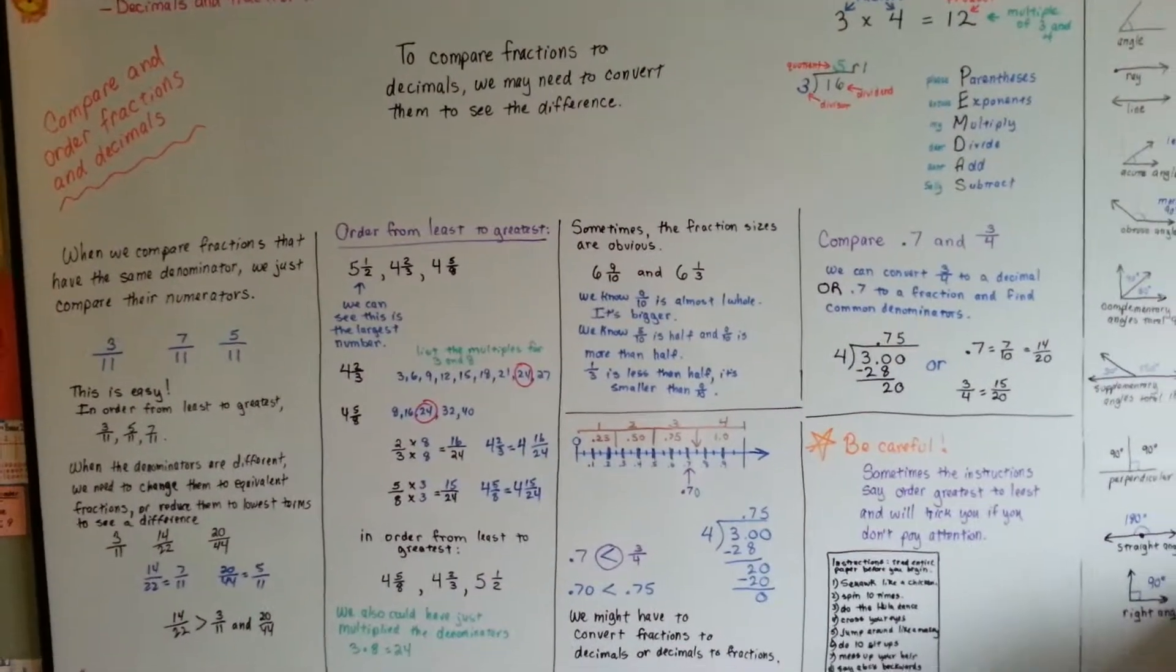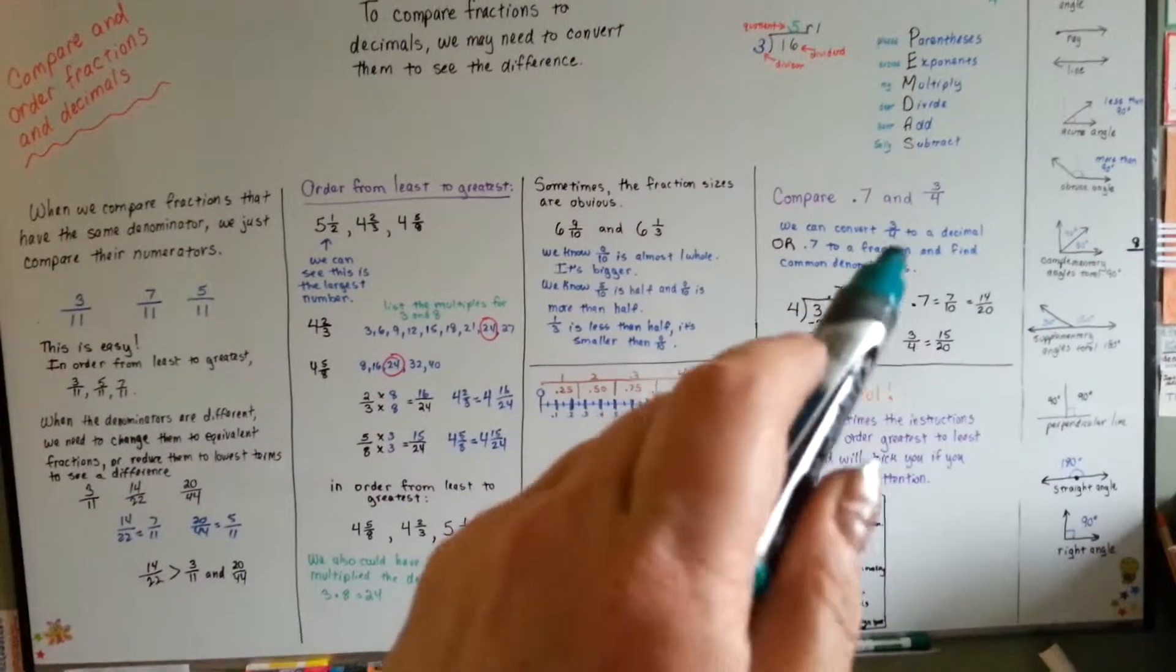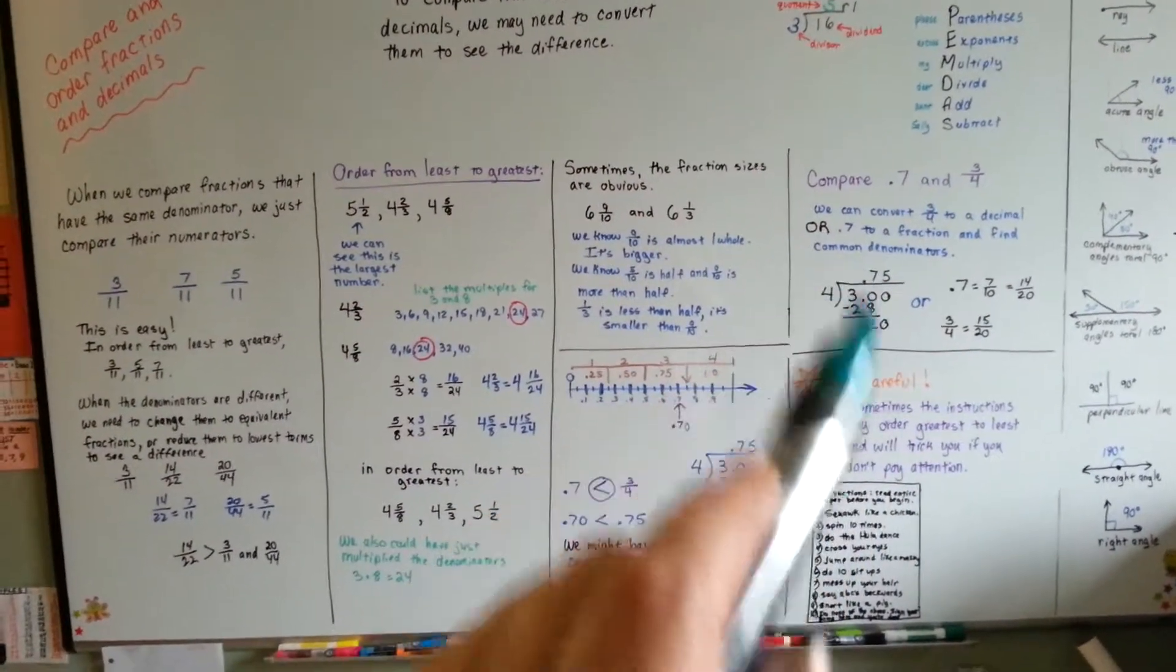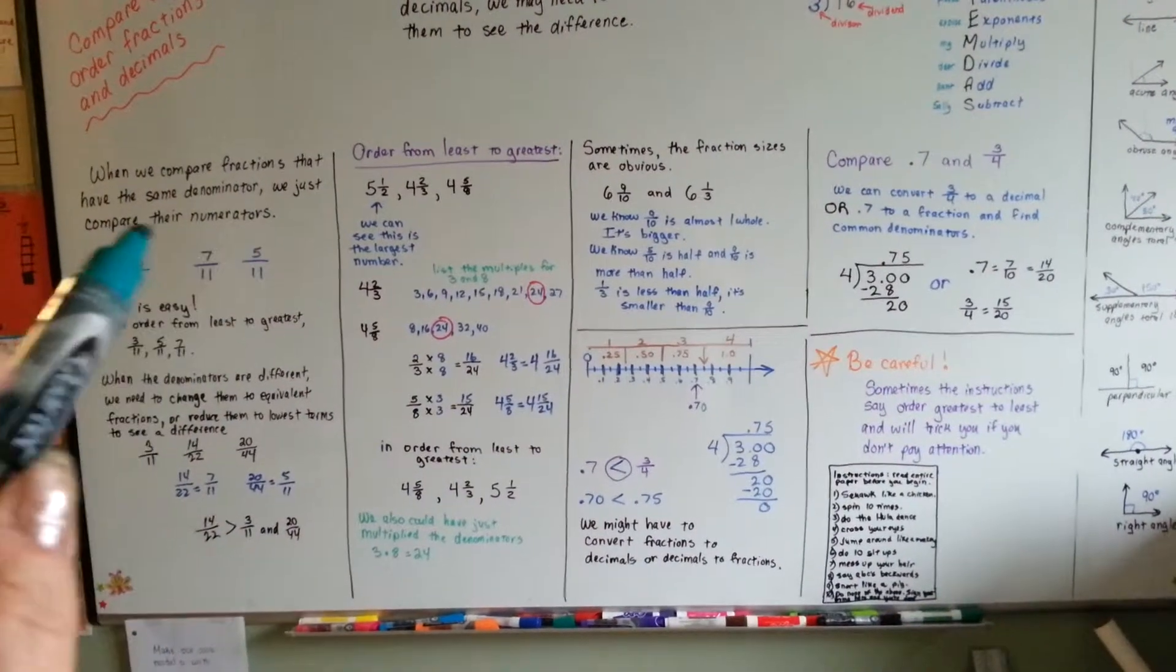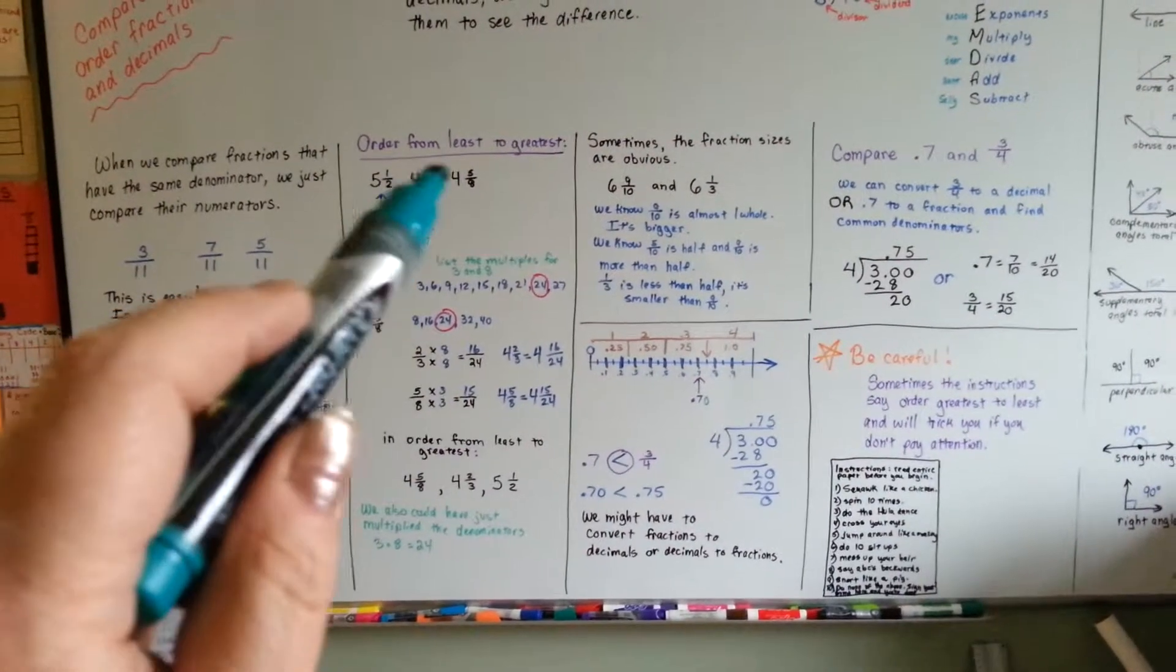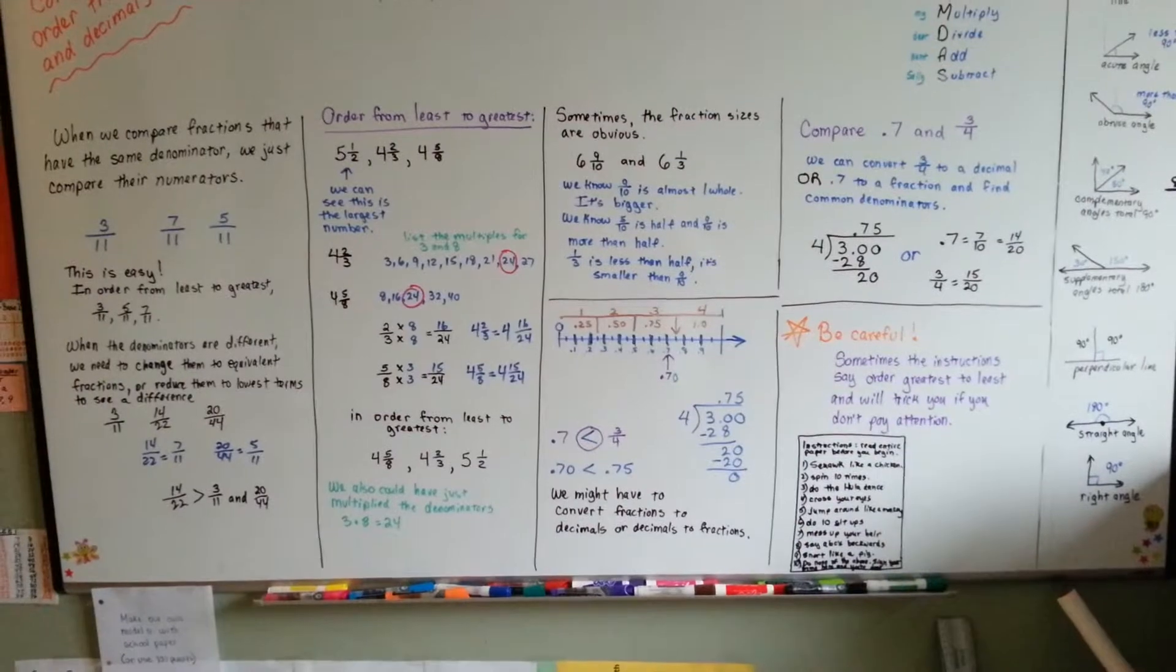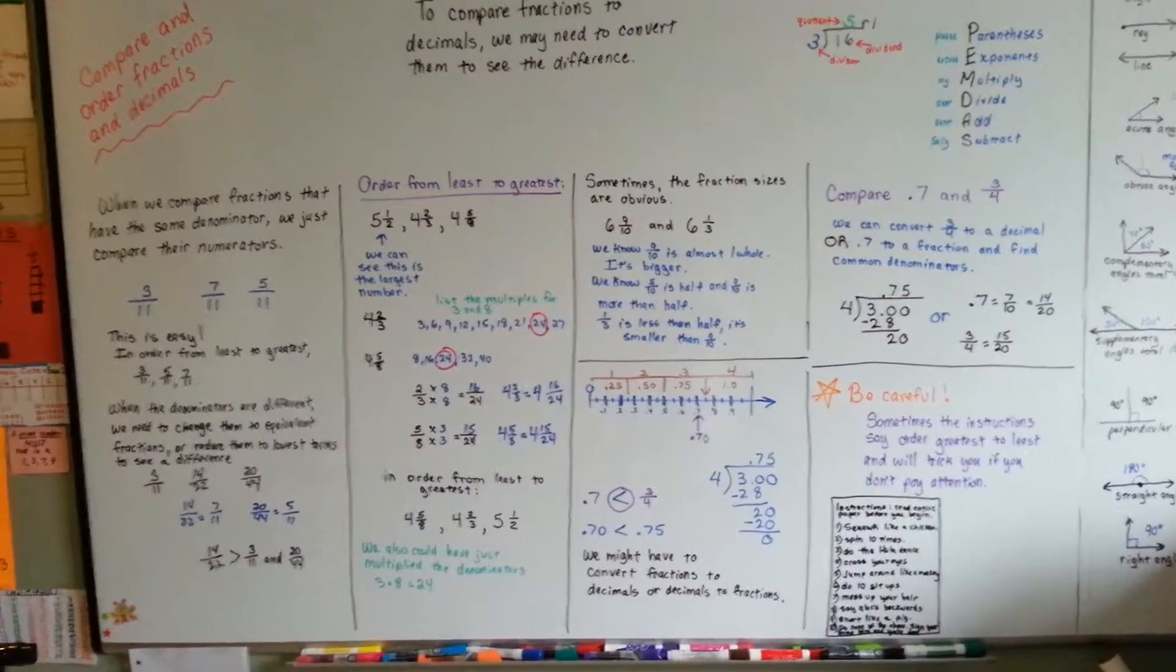So, that is comparing and ordering fractions and decimals. You can use the halfway benchmark. You can convert them to a fraction or a decimal to help compare them. You can look at the denominators and just compare the numerators. And you can look at the whole numbers and see which one is going to be first or last. But pay attention if it says least to greatest or greatest to least because that's the one that's going to get you the most. That's the one that's going to trick you.